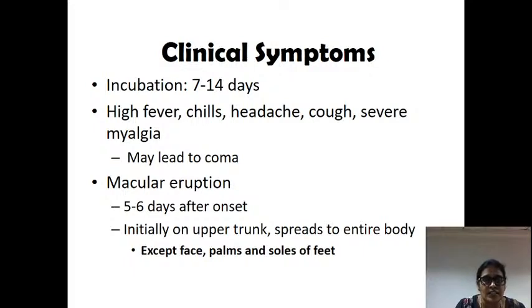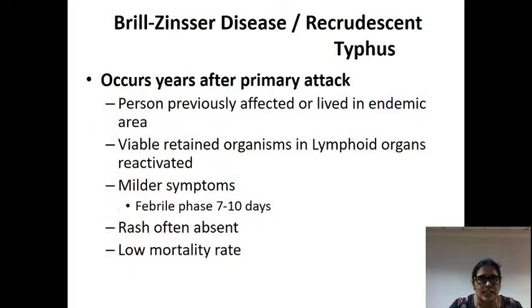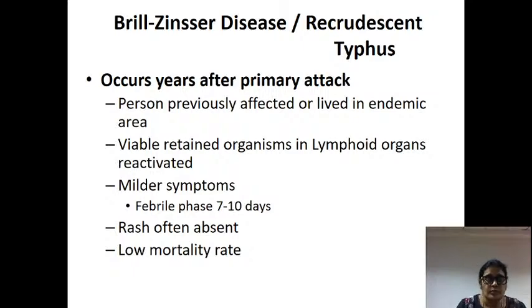For the rash, do not forget to write: rash is present except on the face, palms, and soles. Brill-Zinsser disease is the recurrence — after many years the infection reactivates in the same individual. On recurrence it will be a milder disease and the rash will not be as prominent as in typical epidemic typhus.